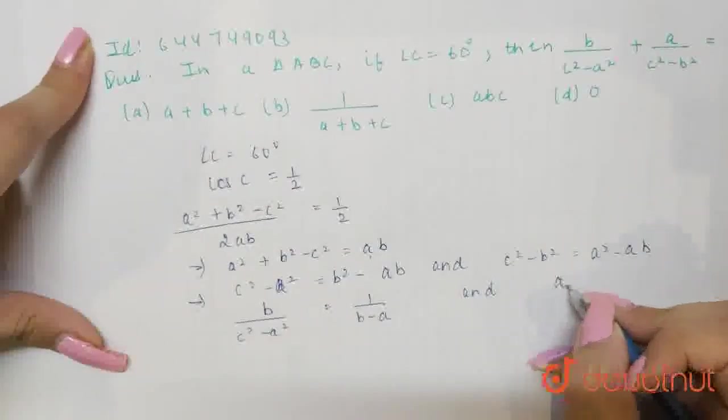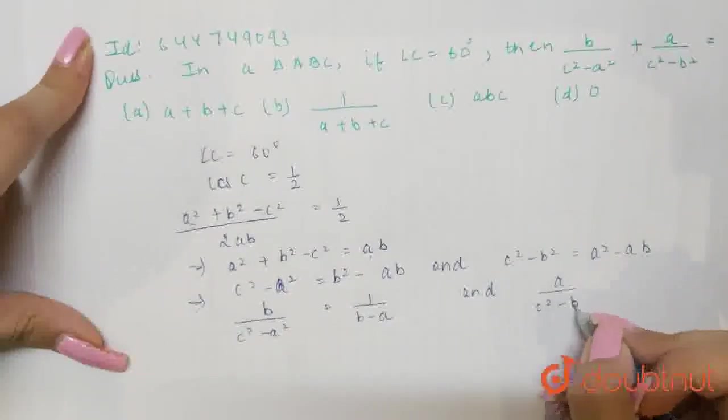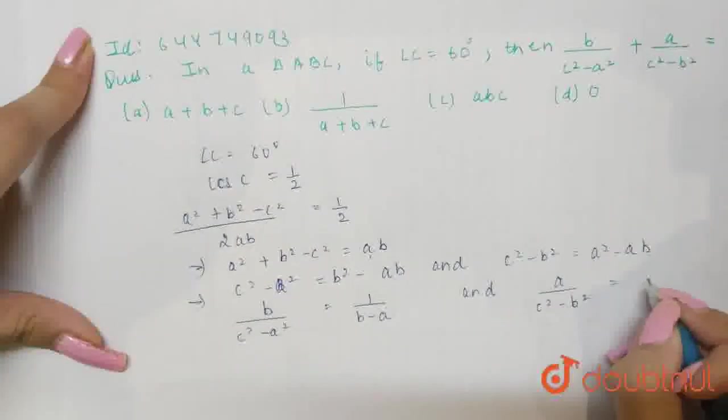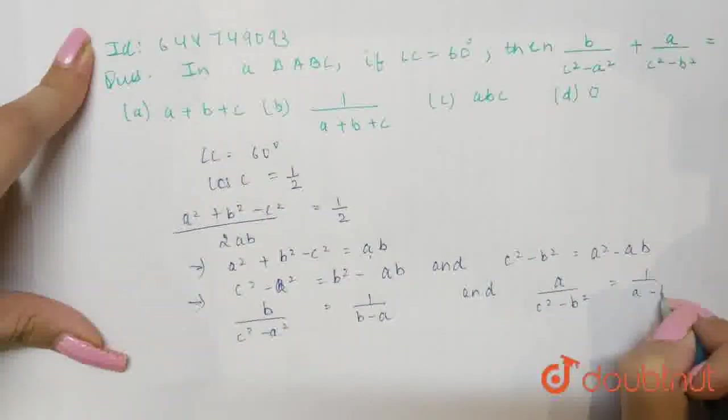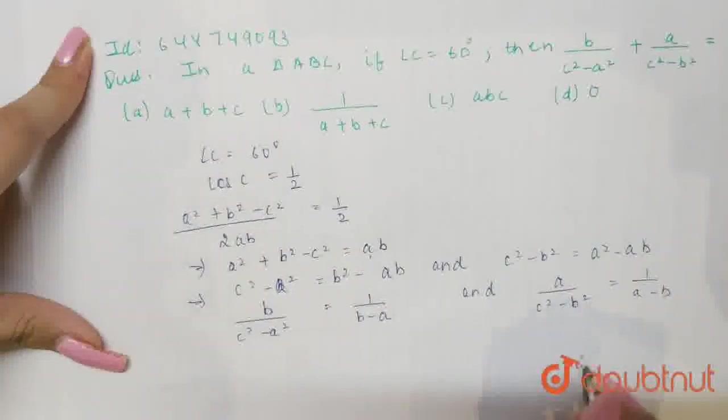Similarly, if I divide a by c square minus b square, then a will divide, this will be 1 upon a minus b, right?